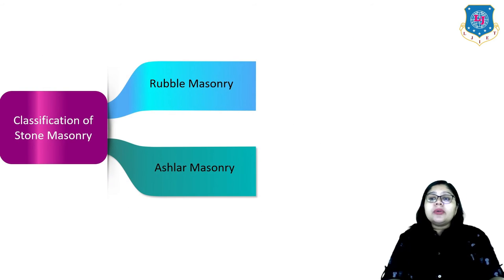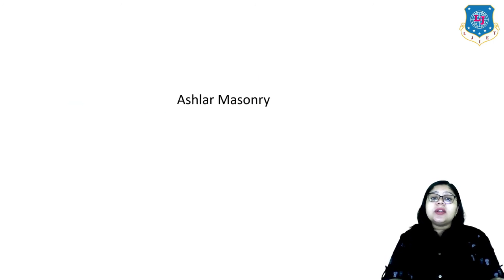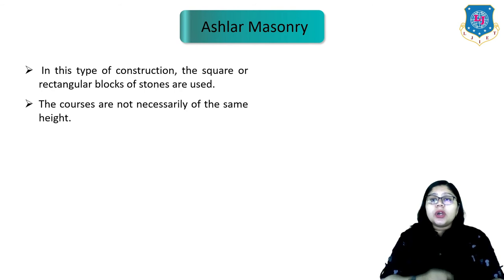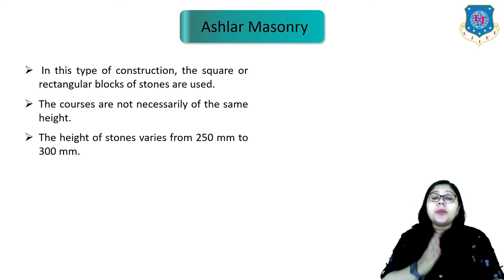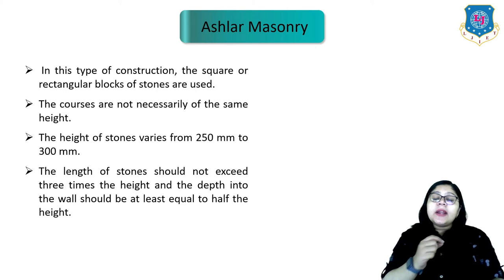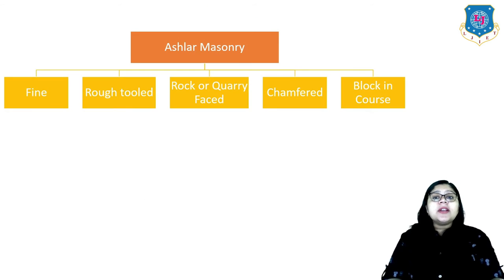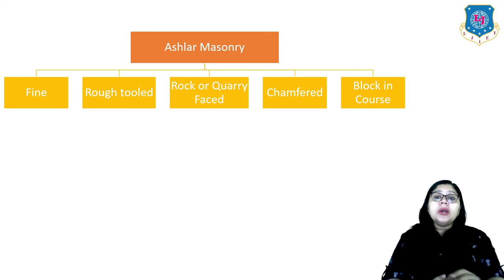The second type of stone masonry is ashlar masonry. In this type of construction, square or rectangular blocks of stones are used and courses are not necessarily of the same height. The height of stones varies from 250 to 300 mm, the length of stones should not exceed three times the height, and the depth into the wall should not be less than half the height. Ashlar masonry can be classified as fine, rough tooled, rock-faced, chamfered and block-in-course.